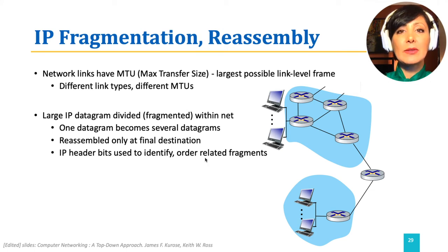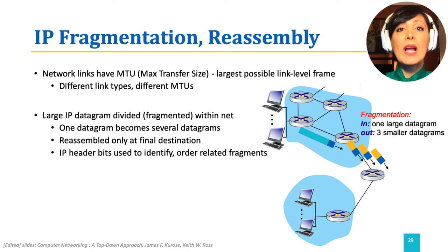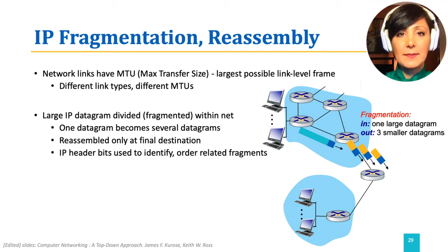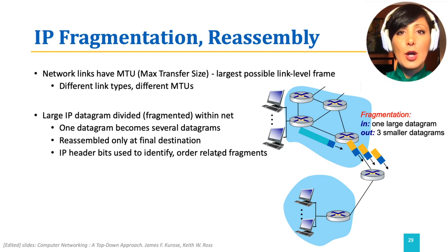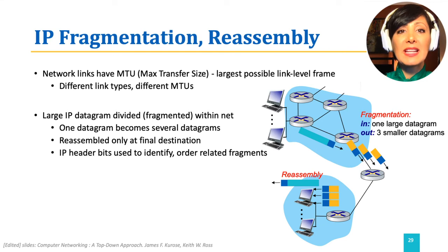Large IP datagrams need to be divided into smaller datagrams while passing along links with a smaller MTU than the datagram size. This is called fragmentation. The smaller datagrams will be put together when they arrive at the destination, making the original datagram again. This step is called reassembly.